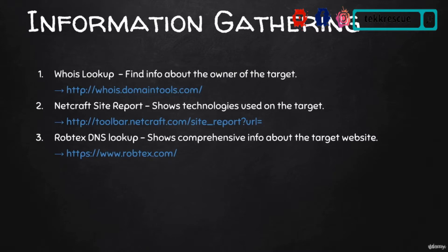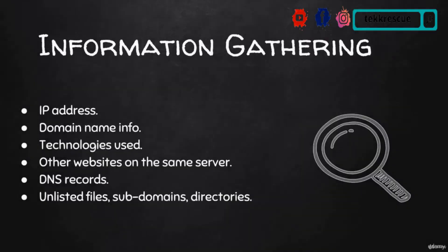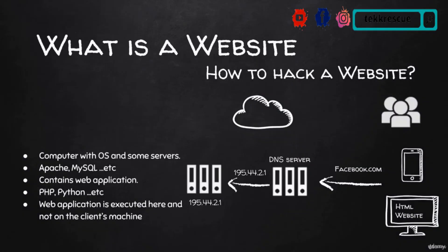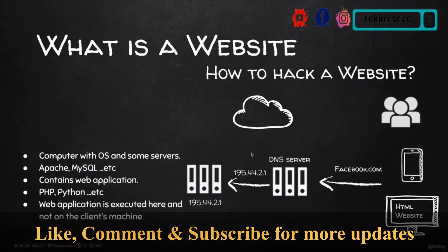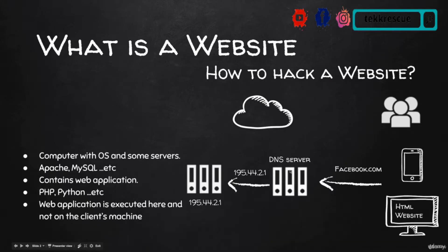In this video we'll see how we can get comprehensive DNS information about a target website. As a quick refresh on what DNS is: when you type in facebook.com, a DNS server will convert that name to an IP address. The DNS server contains a number of records, each pointing to a different domain or IP address. In general, you request a domain name and it gets converted to an IP address, and this information needs to be stored somewhere, so we're going to query the DNS server and see what information we can get.